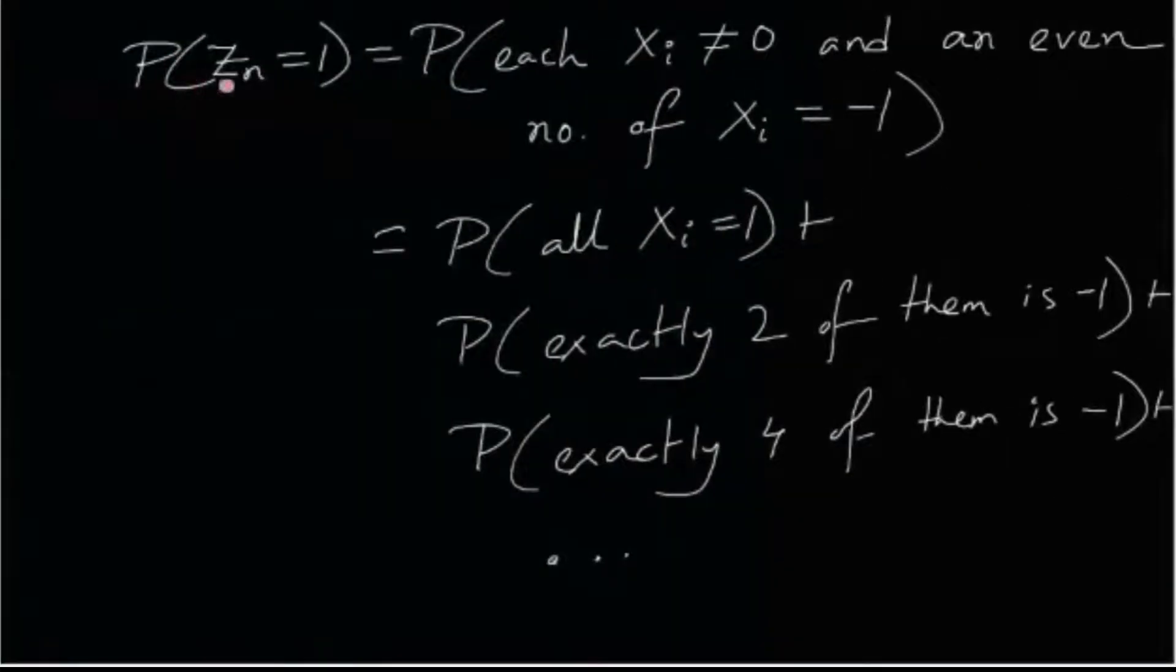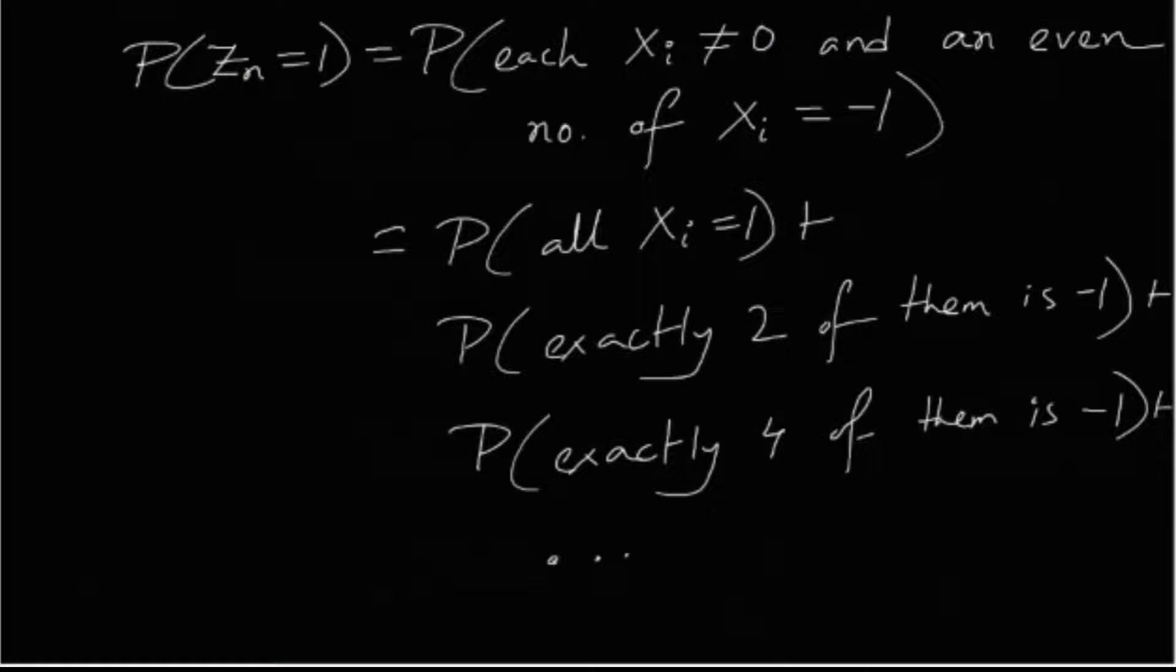Now for an, an is equal, this is the probability zn equals to 1. That means what? It means each of the xi has to be non-zero because if even one of them is 0, then the entire product becomes 0. So we don't want that. So each of them has to be non-zero and an even number of xi is minus 1.